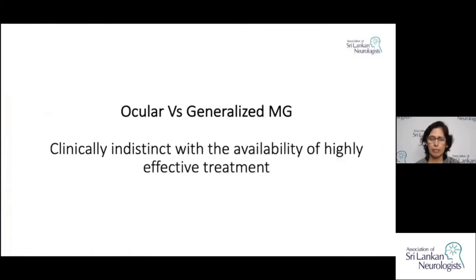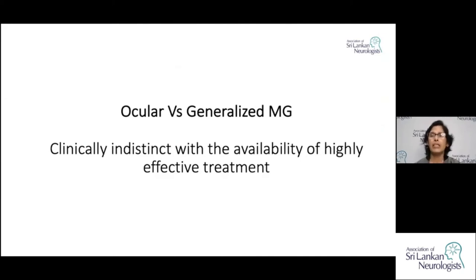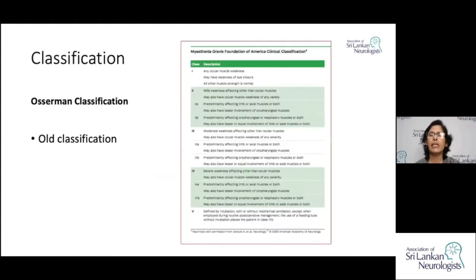Ocular versus generalized Myasthenia: ocular symptoms occur in 80% of patients and majority become generalized as disease progresses. If symptoms remain confined to the eyes for more than two years, we describe it as ocular Myasthenia. However, with the development of highly effective treatments, this distinction has become clinically less clear. The previous classification used is the Osserman classification to categorize severity of illness.